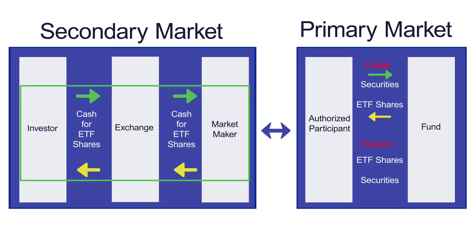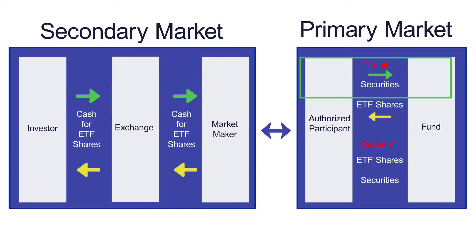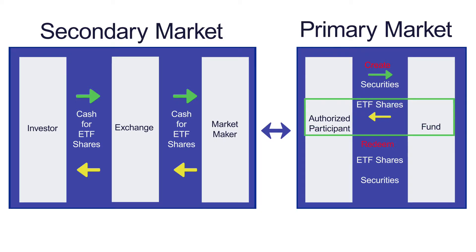Conversely, market makers will be buying the ETF where they can sell the underlying basket. As investors buy the ETF throughout the day, market makers have sold more shares than they have. At the end of the day, they come to the fund in the primary market to create new shares. They deliver the underlying basket they were buying all day to the fund, the fund takes in those assets and creates new ETF shares, then delivers those shares back to the authorized participant or market maker to flatten out their short position.